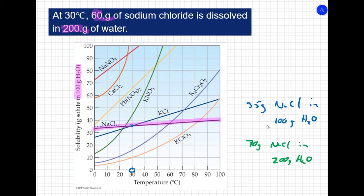So according to the chart, I can put 70 grams of sodium chloride in 200 grams of water. If I have 60 grams of sodium chloride, well, then I have more room for more solute. I'm not at the saturation point yet. So the answer to this question is if you have 60 grams of sodium chloride dissolved in 200 grams of water at a temperature of 30 degrees Celsius, then your solution will be unsaturated.